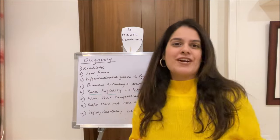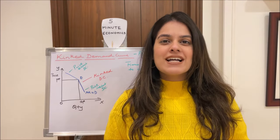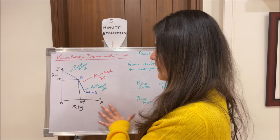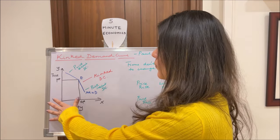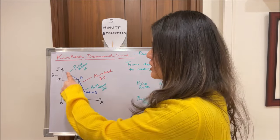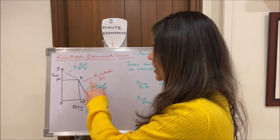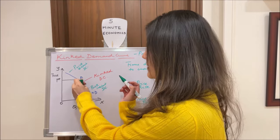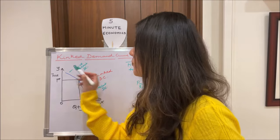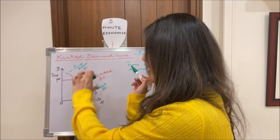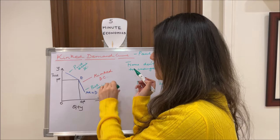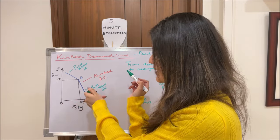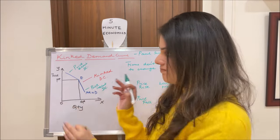Now let's come to the kinked demand curve. On the x-axis we have quantity demanded, and on the y-axis we have price, just like a normal demand curve. This blue line is our kinked demand curve, and point E is the kink, showing the shape of the curve changes at that point. The portion above point E is the price elastic demand curve, and the portion below is the price inelastic demand curve. The demand curve here is also the average revenue curve, so AR equals D.